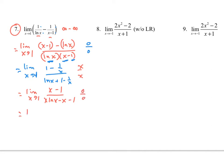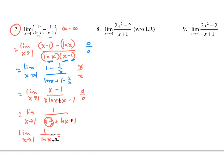So we apply L'Hopital's Rule one more time, with x approaching 1. The derivative of the numerator gives 1 — always a good thing. The derivative of the denominator uses the product rule: first times the derivative of the second, plus the second times the derivative of the first, minus 1. After simplification, the 1 minus 1 terms cancel, giving the limit as x approaches 1 of 1 over (ln x plus 2). Plugging in x equals 1 now gives 1 over 2, so the limit is 1 half.